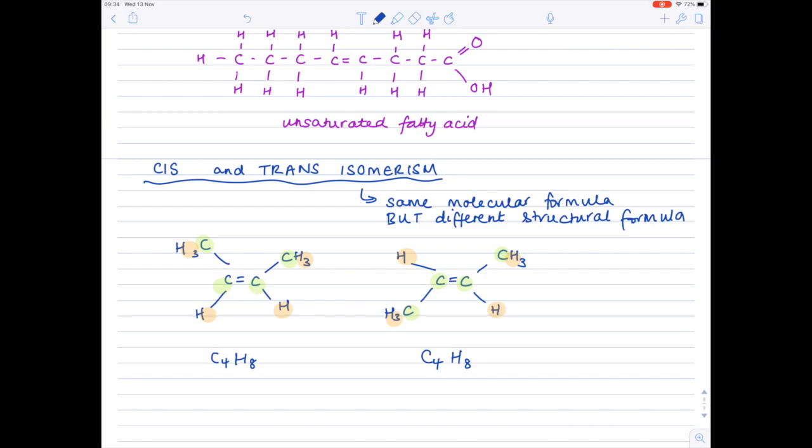Now to understand cis and trans isomerism, let's have a look at the Latin. Cis means this side of, and trans means the other side of. And so in the context of science, if we have a look at cis, it means this side of. It means that both the functional groups, so that is to say the special parts of the molecule, must exist on the same side.